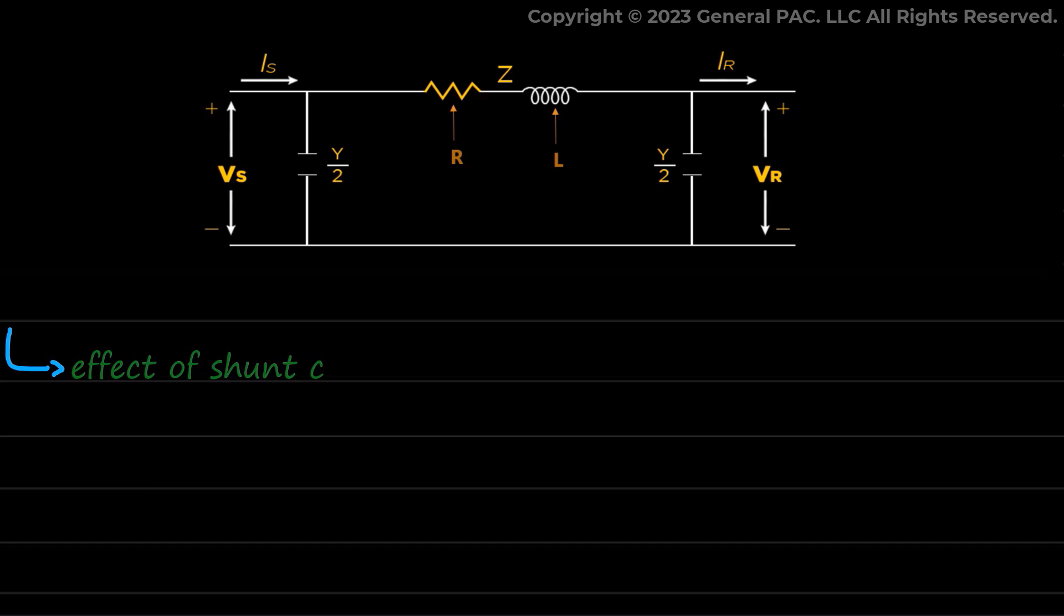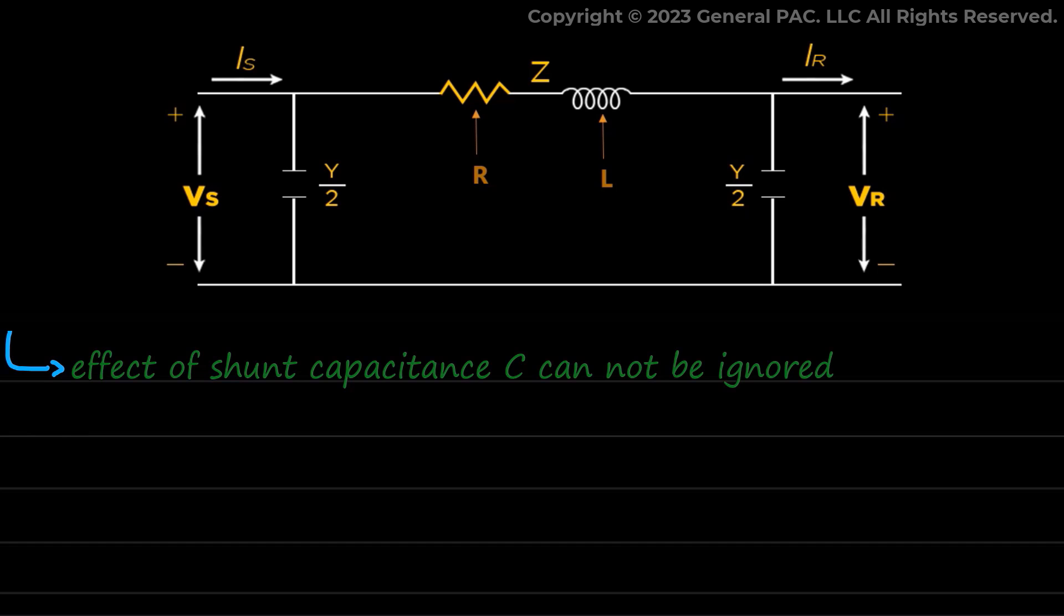Resistance R and inductance L are evenly distributed along the medium line, just as modeled in the previous short line.